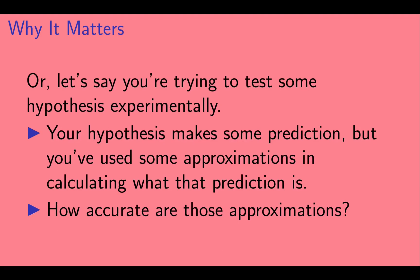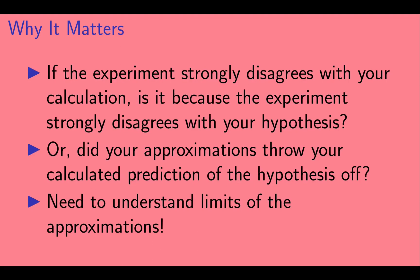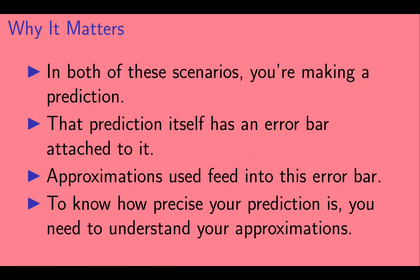Alternatively, let's say you're trying to test some hypothesis experimentally. Your hypothesis makes some prediction, but you've used some approximations in calculating what that prediction is. How accurate are those approximations? If the experimental result strongly disagrees with your calculation, is it because the experiment strongly disagrees with your hypothesis? Or did your approximations throw off your calculated prediction? It's important to understand the limits of the approximations. In both scenarios, your prediction has an error bar attached to it, and any approximations used feed into this error bar. So in order to know how precise your prediction is, you need to understand your approximations.